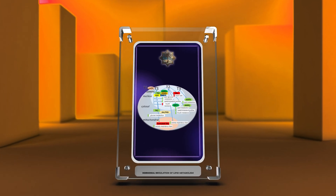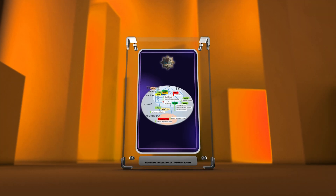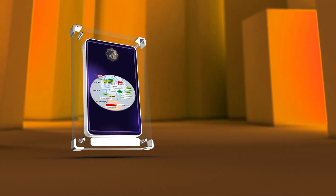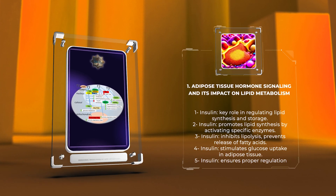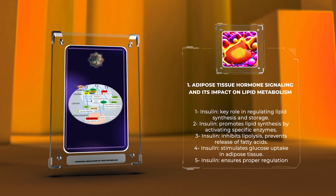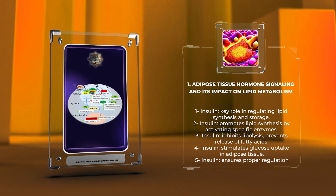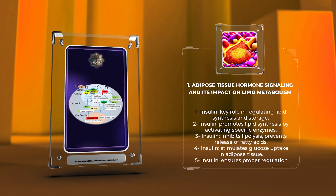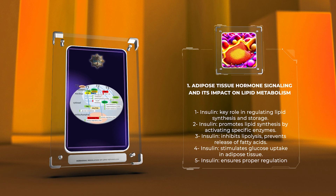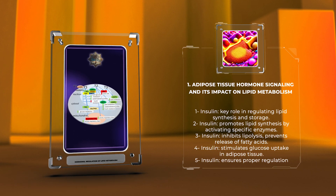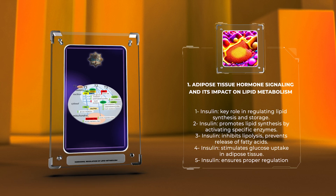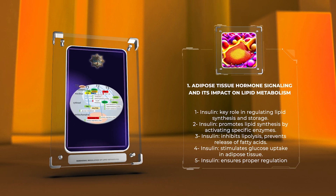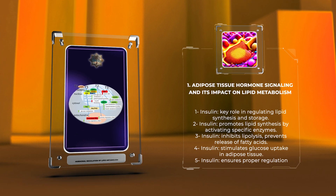Adipose tissue hormone signaling and its impact on lipid metabolism. In the role of insulin in regulating lipid synthesis and storage, insulin plays a key role in maintaining lipid homeostasis. It promotes lipid synthesis by activating specific enzymes involved in fatty acid and triglyceride synthesis. Insulin also inhibits lipolysis, which prevents the release of fatty acids from adipose tissue. Furthermore, insulin stimulates glucose uptake in adipose tissue, which enhances the storage of glucose as triglycerides. These coordinated actions of insulin ensure proper regulation of lipid metabolism and contribute to overall metabolic health.